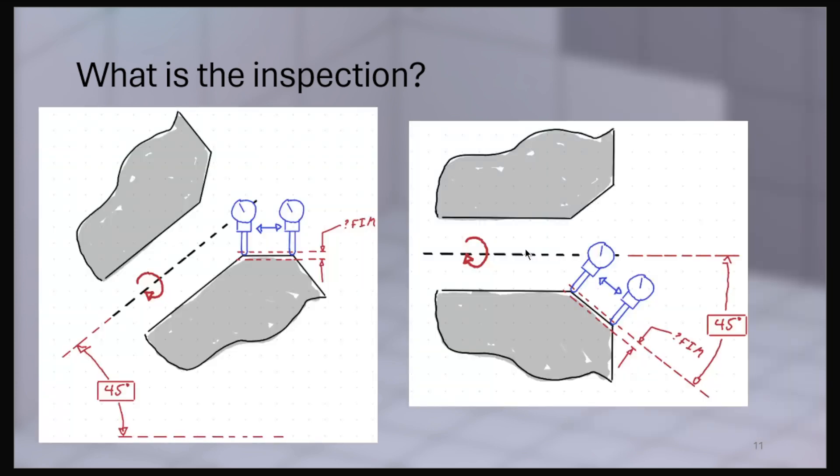So I see two ways you could do this. You could tilt the entire part that you're inspecting to the basic angle relative to some surface, and then translate an indicator along that surface.